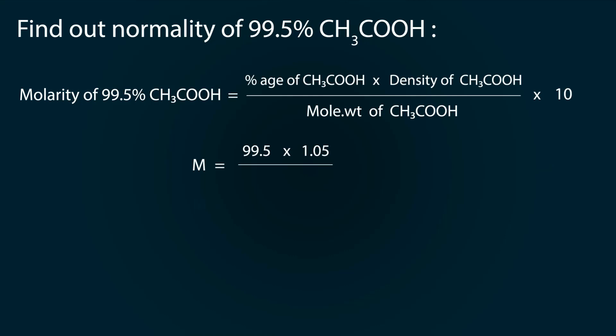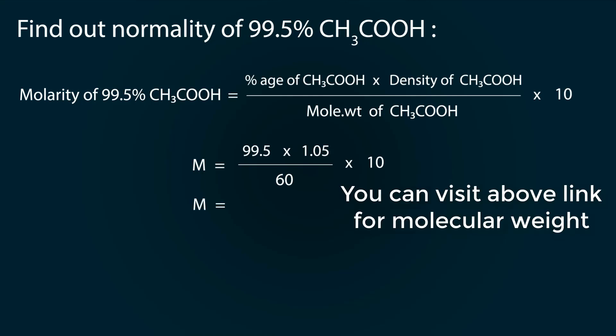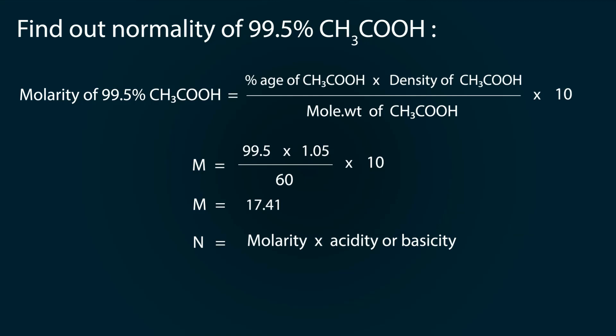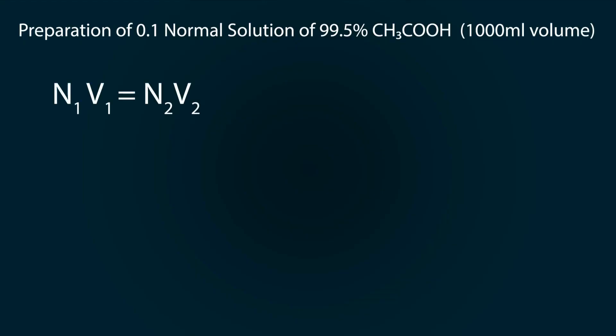Normality equals molarity multiplied by acidity. Acidity of acetic acid is 1, so normality is 17.41. We have to use the dilution formula: N₁V₁ = N₂V₂, where N₁ equals the normality of acetic acid, which is 17.41.